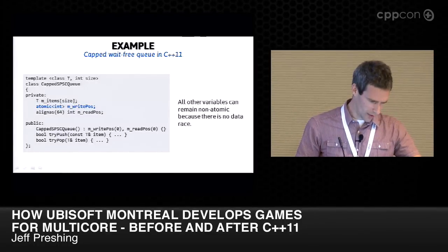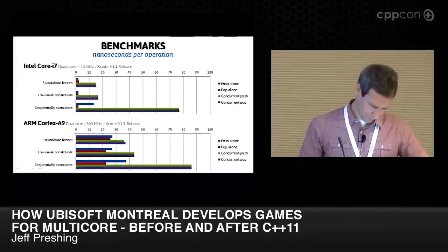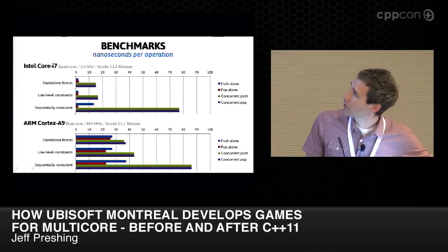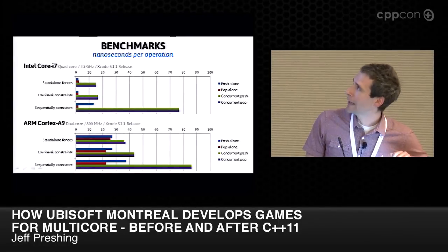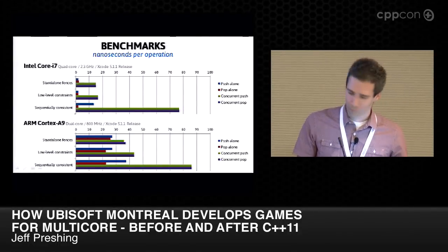I compiled that code and ran benchmarks on my MacBook and phone using a recent version of Xcode in release, verified the assembly looks as efficient as expected. After running push-and-pop operations on a queue with 10 million slots, these are the average timings. You can see the penalty paid for sequentially consistent atomics — a bit more dramatic than I expected on Intel. Keep in mind this is a micro-benchmark with maximum contention, which kind of paints low-level atomics in the best possible light.